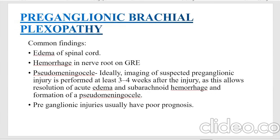First we will see preganglionic brachial plexus. Common MRI findings are edema of the spinal cord, hemorrhage in nerve roots on GRE sequence, and pseudomeningocele. Ideally, imaging of suspected preganglionic injuries should be performed at least 3 to 4 weeks after injury. This allows resolution of acute edema, subacute hemorrhage, and formation of pseudomeningocele.